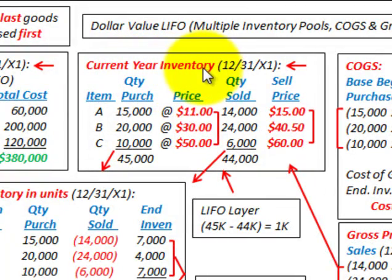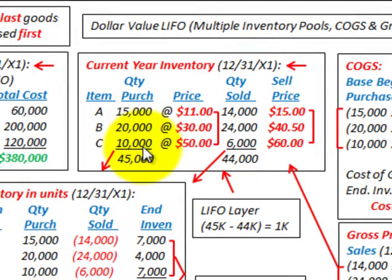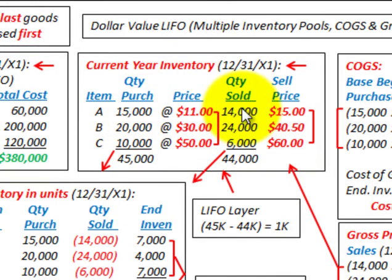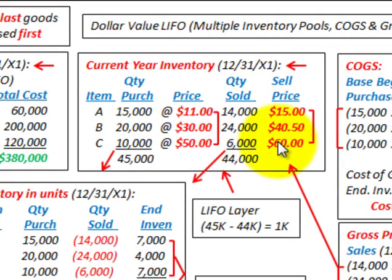Looking at our current year inventory at the end of 12/31/X1, we have quantities purchased for items A, B, and C at a specific price — the price we paid for those quantities purchased during the year. We also have a quantity sold for each of those items A, B, and C at a specific selling price.